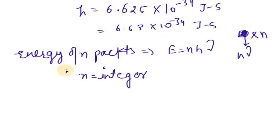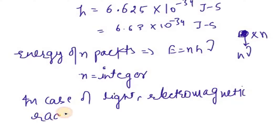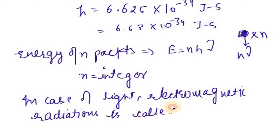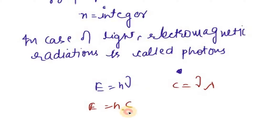In the case of light, electromagnetic radiation energy packets are called photons. Since we know that the speed of light C equals frequency times wavelength, the energy formula becomes E = Hν = HC/λ when talking about electromagnetic radiation.